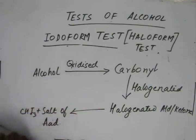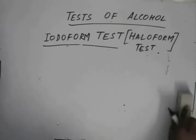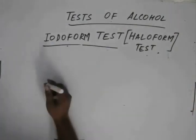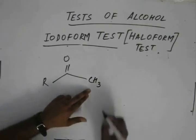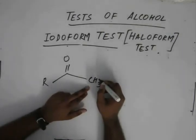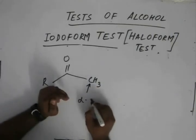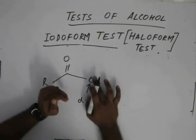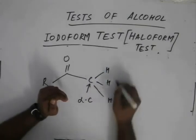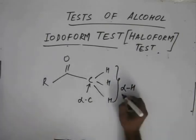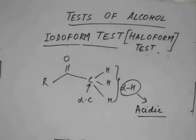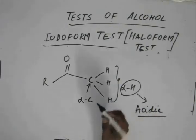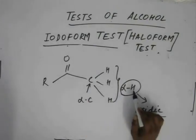The basic thing is that a base extracts the most acidic hydrogen from the compound. In the carbonyl compound formed after oxidation of the alcohol, the alpha hydrogens — on the carbon adjacent to the carbonyl — are acidic in nature. These alpha hydrogens are far more acidic than even alcohols or alkynes.